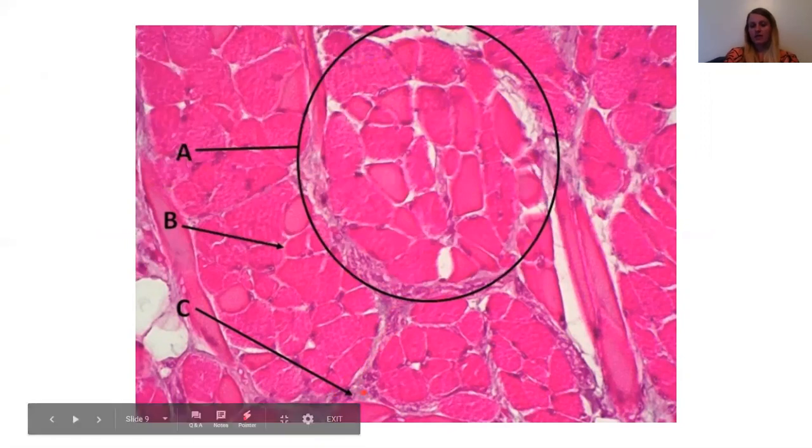So A would be your fascicle. C would be the perimysium because it's going around this fascicle. And then B is pointing specifically to a little cell, so we know that's the endomysium. Hopefully that helps you orient yourselves.